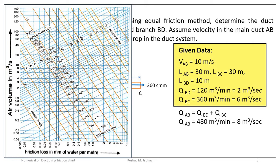To calculate the diameter of a duct, out of three parameters we need to know two. The three parameters are: friction loss in mm of water per meter, air volume in cubic meters per second, and velocity of air in meters per second. If we know any two, we can locate the point on the chart and find the duct diameter. Note that this friction chart is applicable for circular ducts. If a rectangular duct is given, we must convert it to an equivalent diameter of a circular duct — I have prepared a separate video for that, linked in the description.